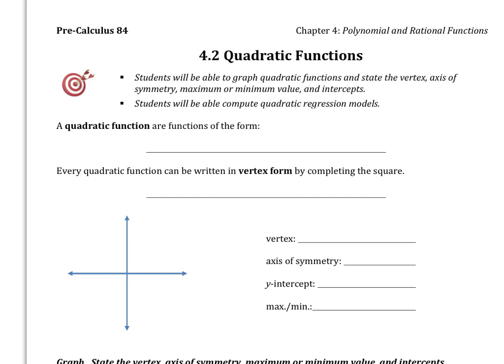Alright, welcome to 4-2 quadratic functions. In this section our focus is going to be on graphing quadratic functions, and in order to do that we have to be able to find the vertex, the axis of symmetry, determine what the maximum minimum values are, and then any y-intercepts that the graph has. We'll also talk about writing an equation for a quadratic function.